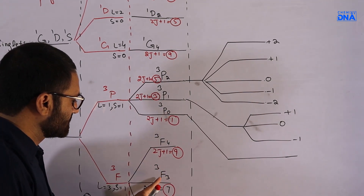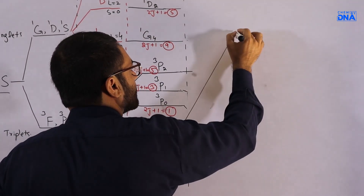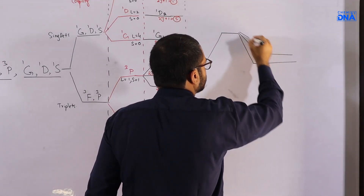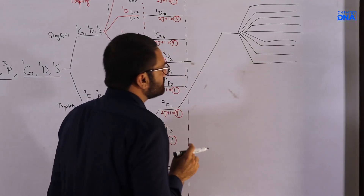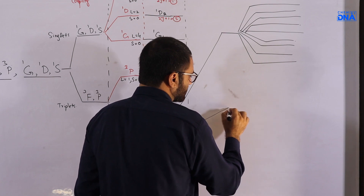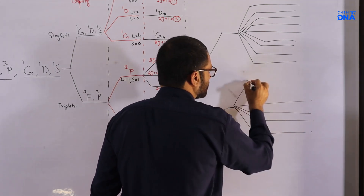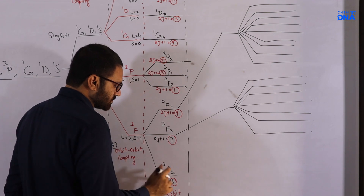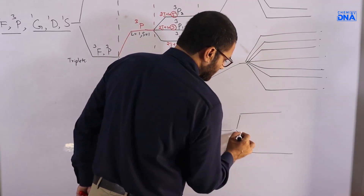Now we move to the ³F triplet system. For ³F₄, 9 mJ values are observed. For ³F₃, you get 7 splitting patterns. For ³F₂, you will have 5 splitting patterns.